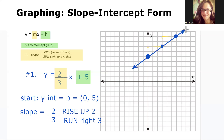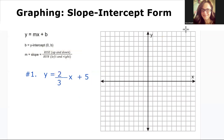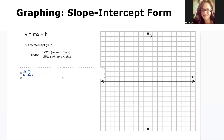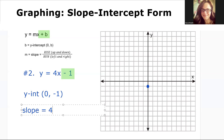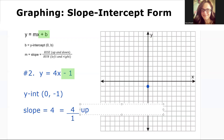Let's do another example. Let's graph the line y equals four x minus one. Let's start with the y-intercept. The y-intercept is minus one, zero comma negative one. Let's graph the first point on our line — the y-intercept, negative one. Using our slope, let's rewrite our slope four as a fraction — we can put four over one. Now we have our rise over our run.